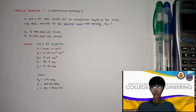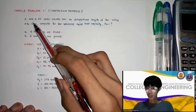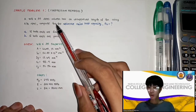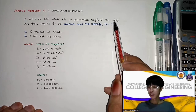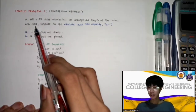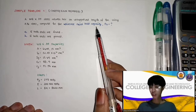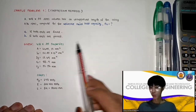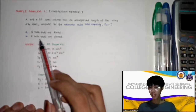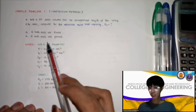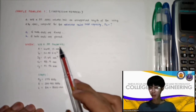For sample problem number one, a W8x35 steel column has an unsupported length of 8 meters using A36 steel. Compute for the ultimate axial load capacity PU — for letter A, if both ends are fixed, and for letter B, if both ends are pinned.